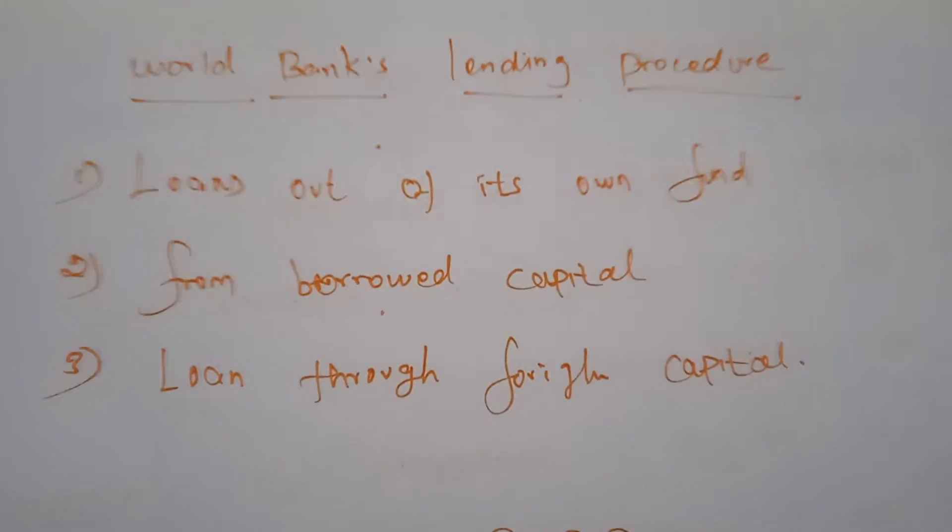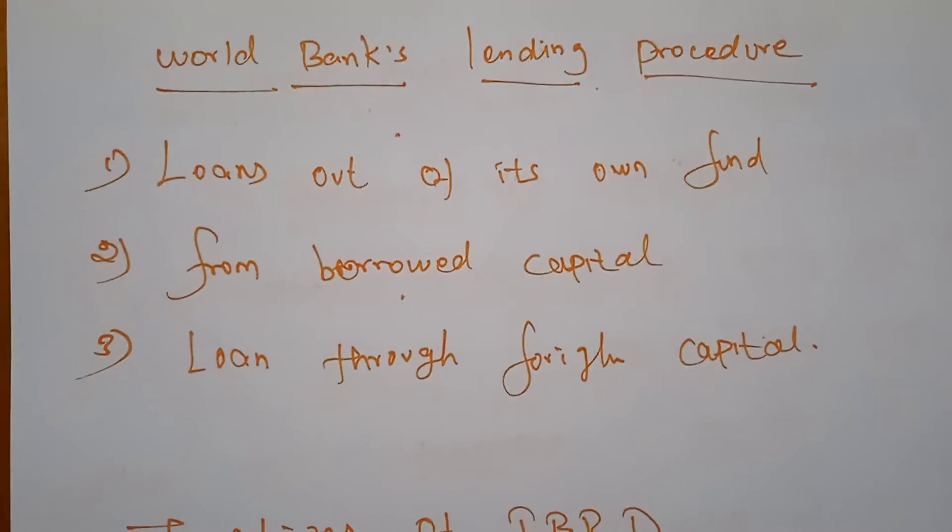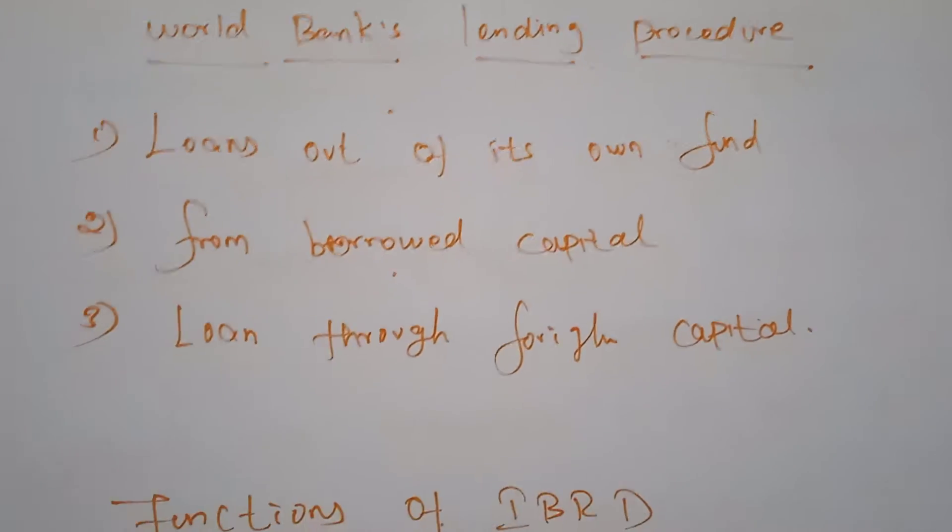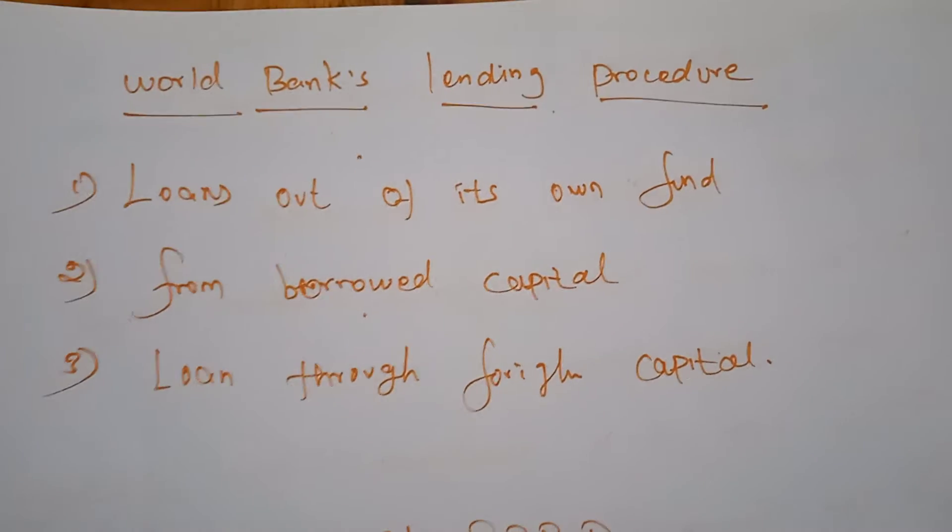Last day we studied the World Bank lending procedures — what procedures the World Banks use for lending financial assistance to their member nations. First, loans out of its own fund: the World Bank always has its own fund abundantly and lends from it. Next, from borrowed capitals. Next, loans through foreign capitals — it also has foreign capital investments, and from these it lends money to member nations.